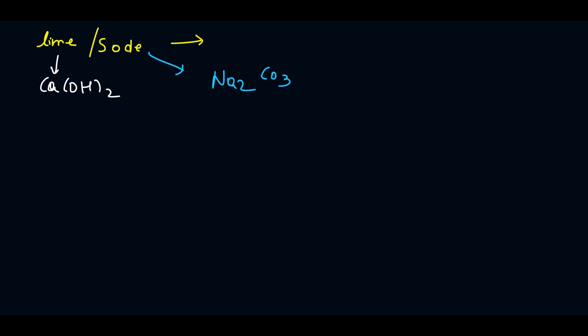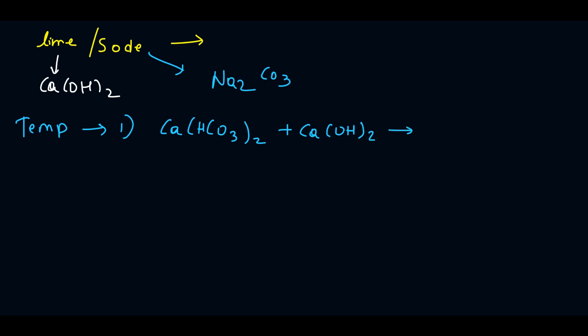We will see the reactions that occur inside the water when we add lime to treat temporary hardness. First, the temporary hardness of calcium: Ca(HCO₃)₂ plus lime Ca(OH)₂ gives us 2 CaCO₃ plus 2 H₂O.